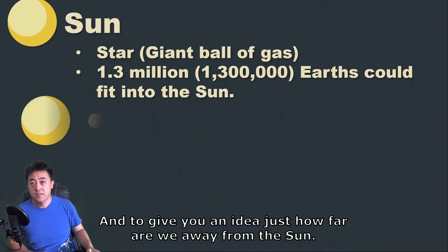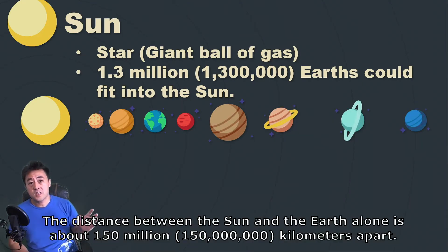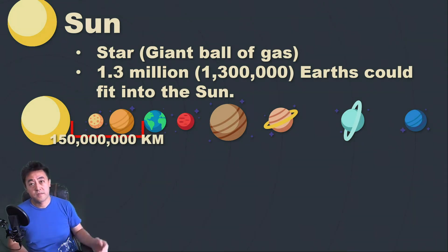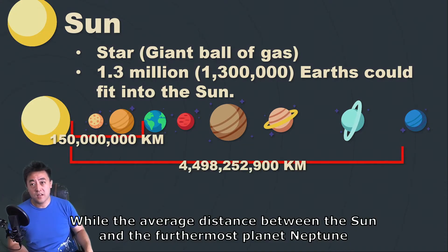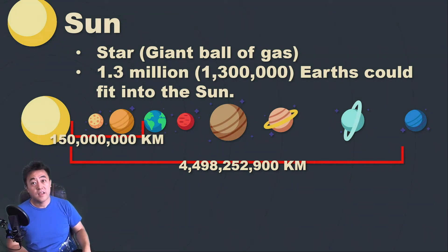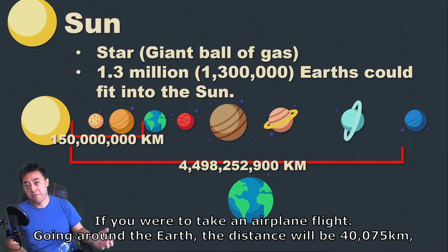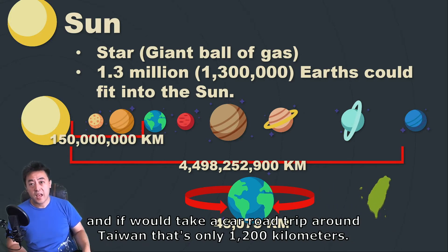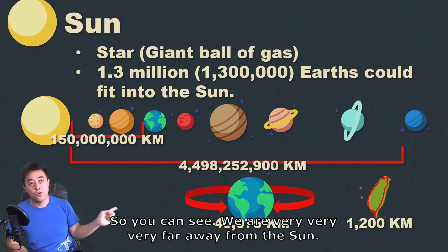To give you an idea of just how far we are from the sun: the distance between the sun and the Earth alone is about 150 million kilometers. While the average distance between the sun and the furthermost planet Neptune is about 4.5 billion kilometers. If you were to fly an airplane around the Earth, that distance would be 40,075 kilometers. And a road trip around Taiwan is only 1,200 kilometers. So you can see we are very, very, very far away from the sun.